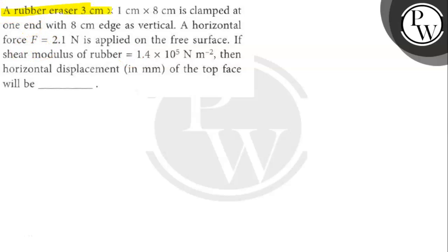The question says a rubber eraser 3 cm × 1 cm × 8 cm is clamped at one end with 8 cm edge as vertical. A horizontal force F = 2.1 N is applied on the free surface. If shear modulus of rubber = 1.4 × 10^5 N per meter square, then horizontal displacement of the top face will be what?